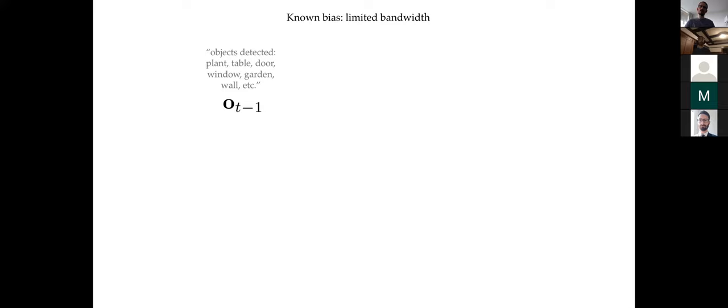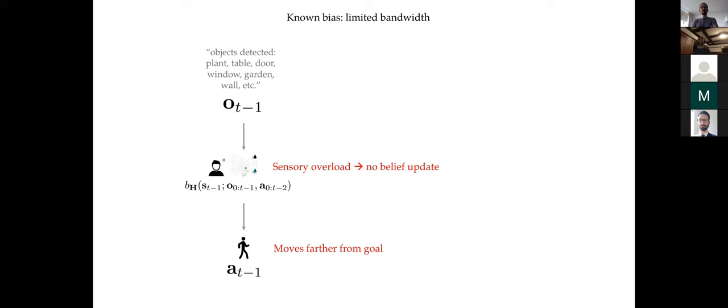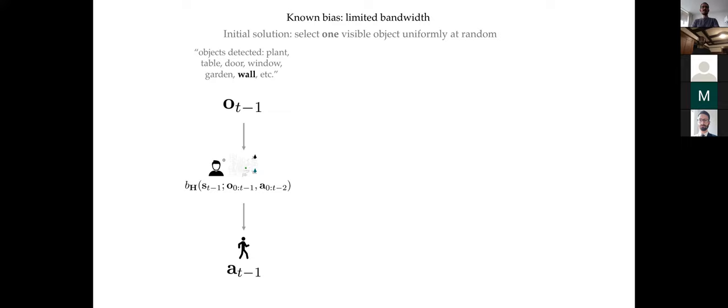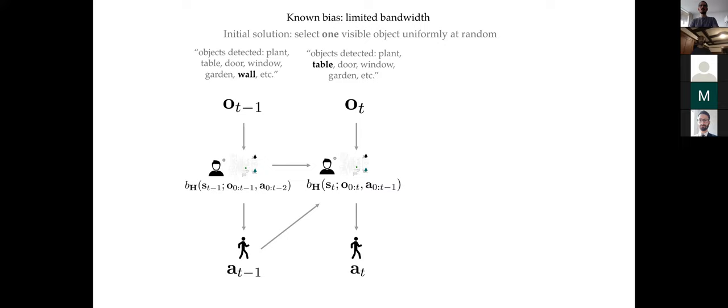In our first set of experiments, we assume the user is primarily affected by limited sensor bandwidth. Consider navigation with visual impairment: the assistant might detect many objects in the scene, but if it tells the user about all of them at once, the user will be overwhelmed and may not be able to incorporate all that new information. One simple baseline is to inform the user about only one object at a time, selected uniformly at random from the set of visible objects.